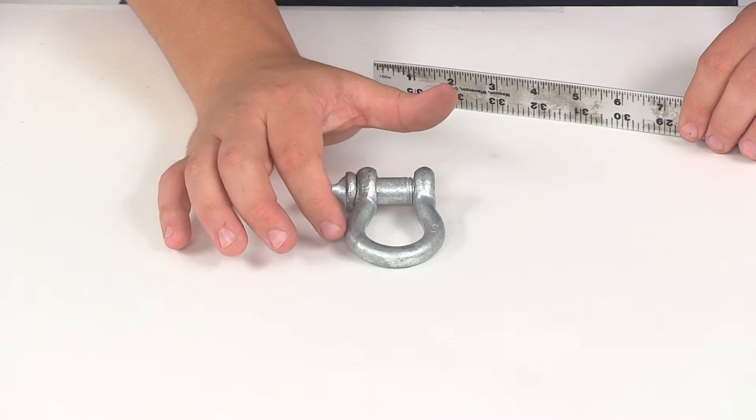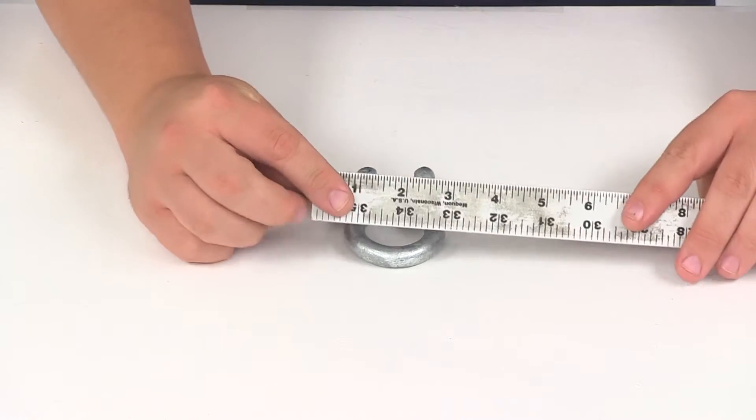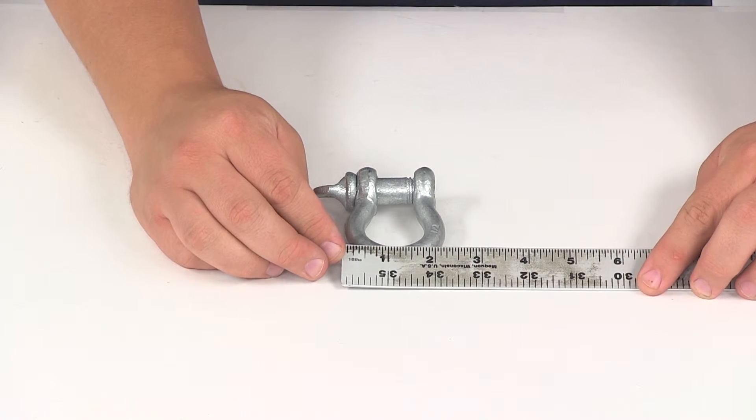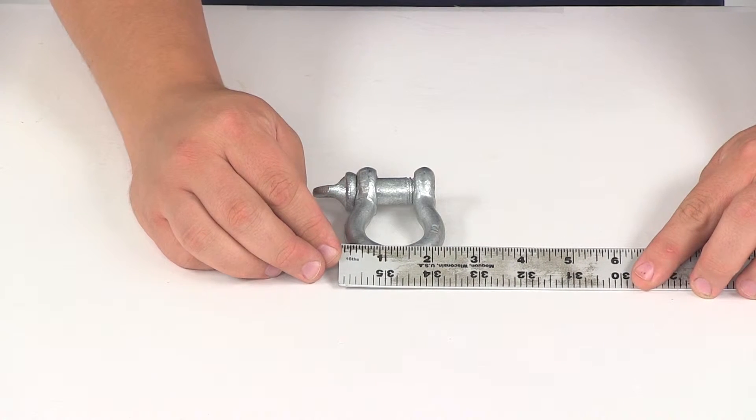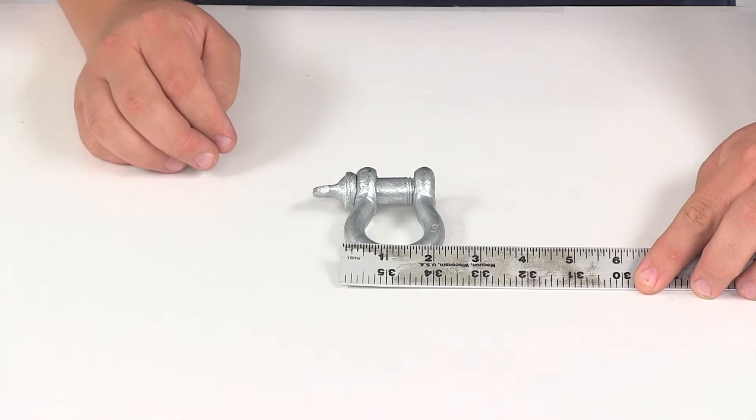Going in this direction, if we just measure from this point here to this point here, that's going to give us a measurement of about two and five sixteenths of an inch.